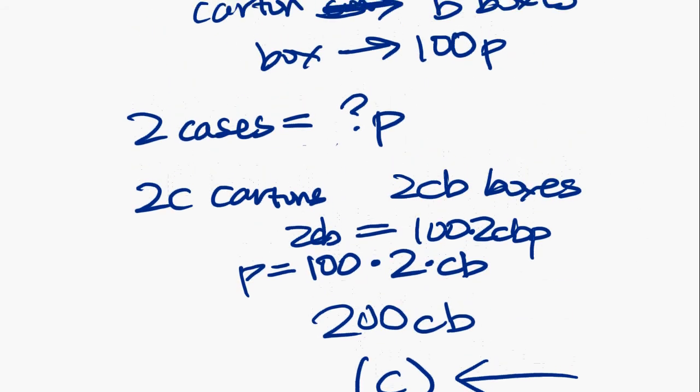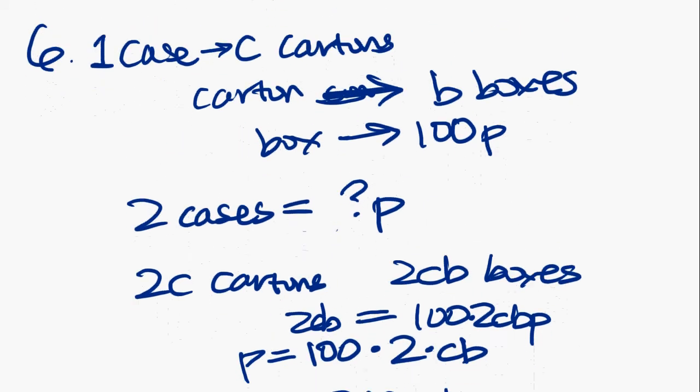Now, I went through this kind of fast. It can be a little confusing because of all the variables. But let me just really quickly explain what I did here in case it was confusing. Because the first time I saw this problem, I was actually pretty confused, and it took me a while to figure out what to do. Now, it's saying here that one case equals C cartons. The C actually represents a number. You can actually just plug in your own number. It doesn't really matter as long as you can check your answer at the end. But you have to kind of think abstractly and pretend that C is a number.